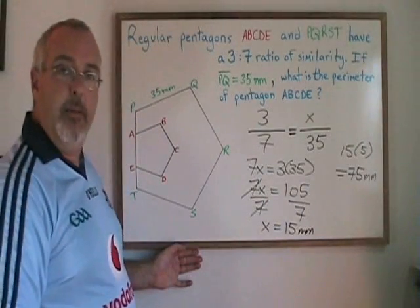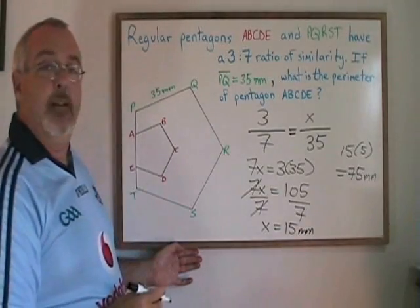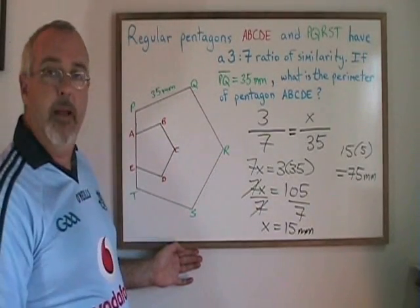Because it is a regular pentagon and all of the sides are equal in length, 5 times 15 is 75 mm. So that is the perimeter of this smaller pentagon.